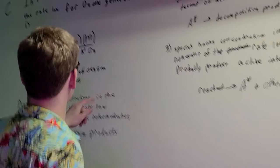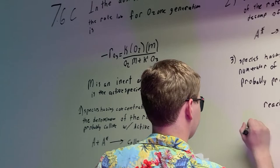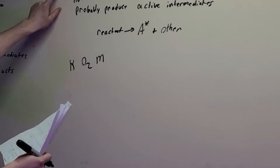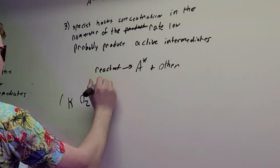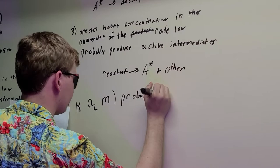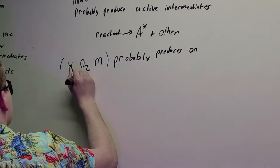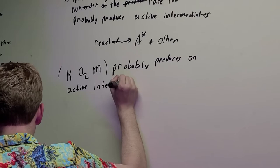So if we take the top, the numerator, K O2 M, we know this is in the numerator and so we can go to rule three saying this probably produces an active intermediate.